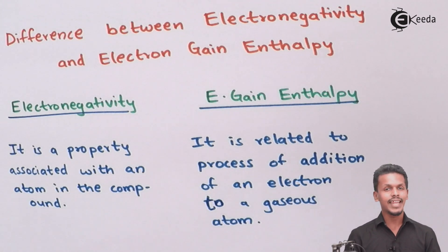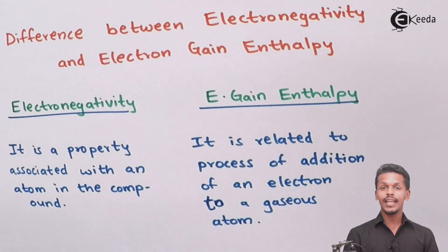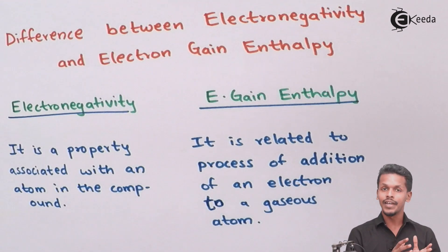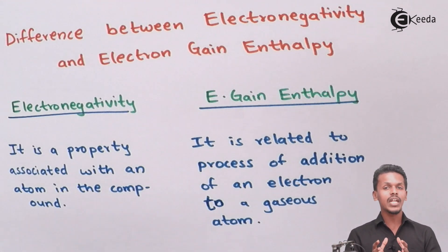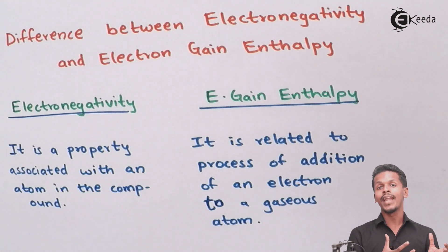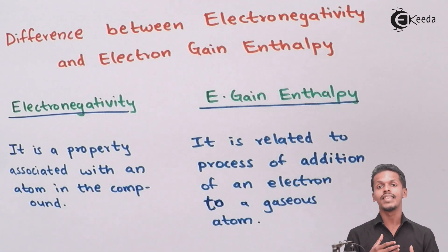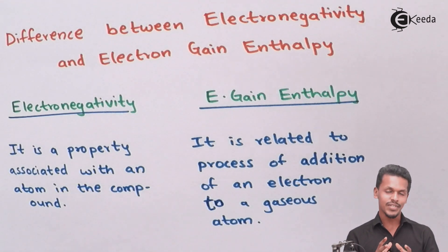Talking about electronegativity: electronegativity is nothing but the tendency of a particular atom to attract the electron of another atom when both atoms are in a molecular form, forming a covalent bond. Electronegativity deals with the ability to attract electrons and has nothing to do with energy, unlike electron gain enthalpy, which has a relationship with the energy produced during that process.